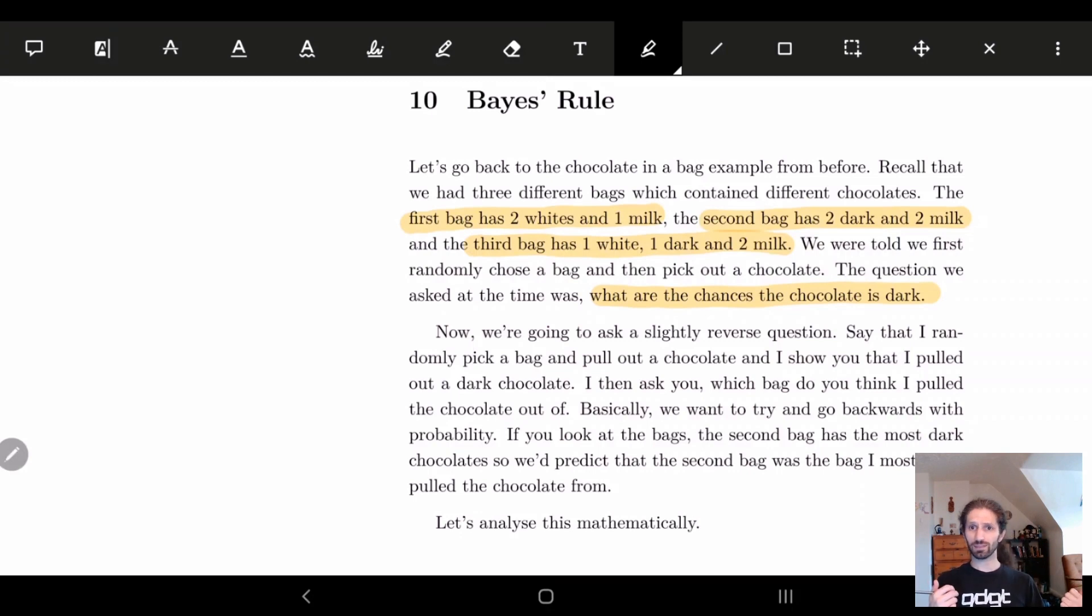Now we're going to ask a little different. We're going to say I choose a bag, I then choose a chocolate, I don't tell you what the bag was, I show you that the chocolate is dark. What are the probabilities for each bag that I chose it from that bag?